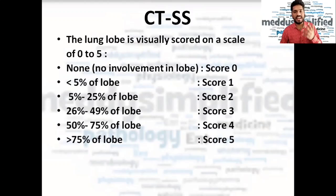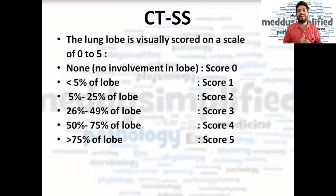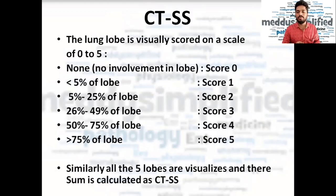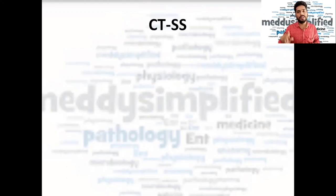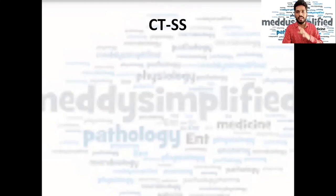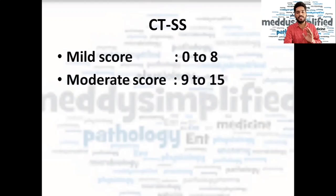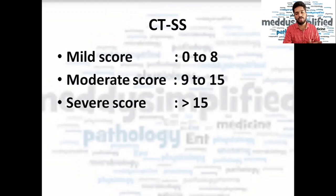Each lobe can have a maximum score of five, and since we have five lobes in total, the maximum possible CT severity score is 25. All five lobes are visualized and their scores are summed as the CT severity score. If the total of all five lobes comes to zero to eight, it is a mild score. Nine to fifteen is a moderate or intermediate score, and more than fifteen is a severe score.